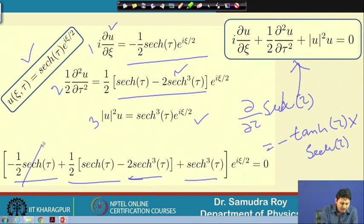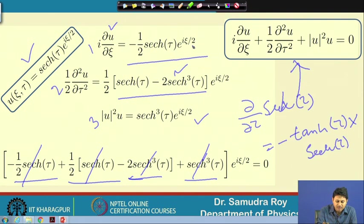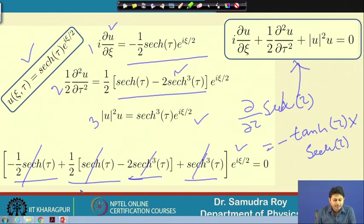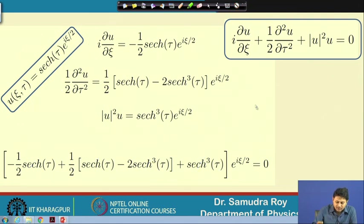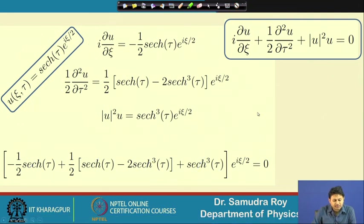Putting all three terms together: the first term gives −½ sech(τ), the second derivative term gives ½[sech(τ) − 2sech³(τ)], and the nonlinear term gives sech³(τ). The −½ sech(τ) and +½ sech(τ) cancel, the −sech³(τ) and +sech³(τ) cancel, giving zero. We can confirm quite easily that the sech(τ) solution is indeed a solution of the Nonlinear Schrödinger Equation.